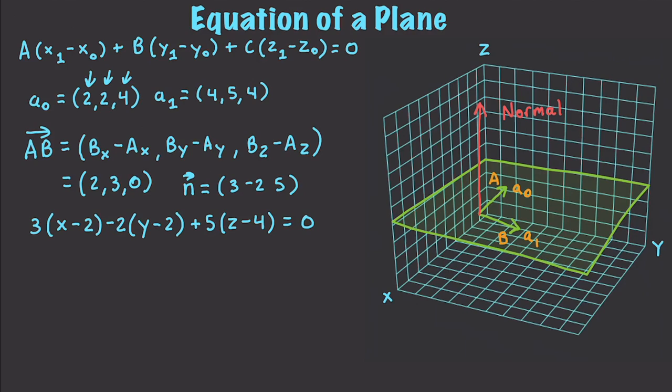And this is going to be equal to zero. And basically, just only with the normal, along with a point in the plane, we are able to create the entire plane equation. If we go and multiply this out, this gets 3X minus 6 minus 2Y plus 4 plus 5Z minus 20 is equal to zero. And then we can convert this into 3X minus 2Y plus 5Z minus 22 is equal to zero.